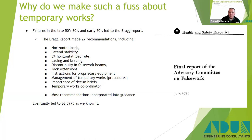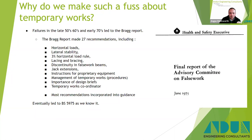That culminated in 1975 with the publication of the Bragg Report. If you're a designer and you haven't read it, you probably should, because it gives a lot of indications about what we should be doing — not all of the recommendations made their way into BS5975, but many did. We have the Bragg Report to thank for things like formalising the horizontal load rule — we now use 2.5%, they recommended 3% — the idea of lacing and bracing, considering discontinuity in falsework beams and jack extensions, making sure there are instructions for proprietary equipment, and the management of temporary works. The whole idea of a TWC came from the Bragg Report.